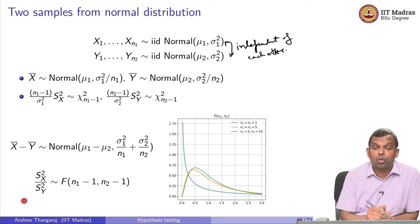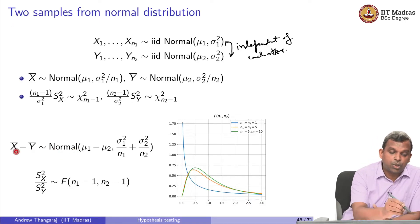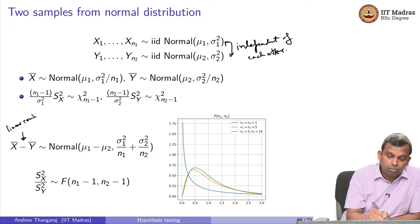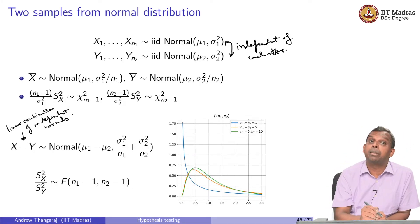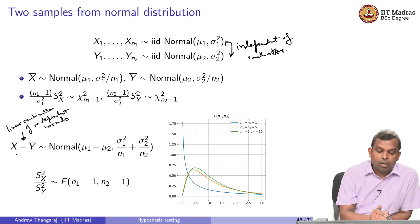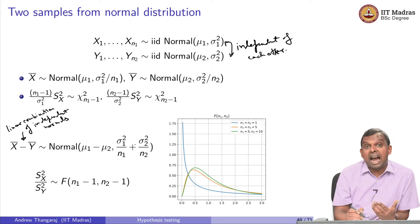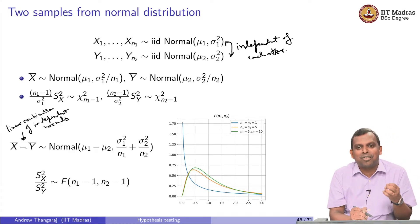What are the two interrelated distributions? The first is X̄ minus Ȳ. The difference between the two sample means is once again normal. This is not very hard to show. If you think about it, it is a linear combination of independent normals. We have studied this before. Linear combination of independent normals is again a normal distribution. Once you say it is normal, I only need to find the expected value and the variance.